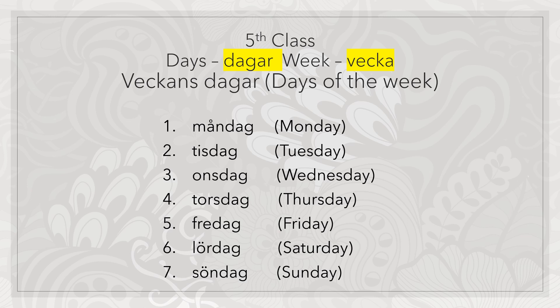Days are called dagar. Week is vecka. Now the days of the week: Monday is Måndag, Tuesday is Tisdag, Wednesday is Onsdag, Thursday is Torsdag, Friday is Fredag, Saturday is Lördag, Sunday is Söndag.